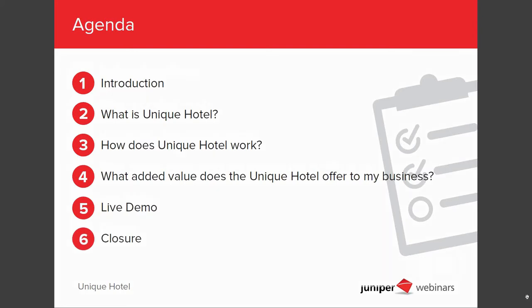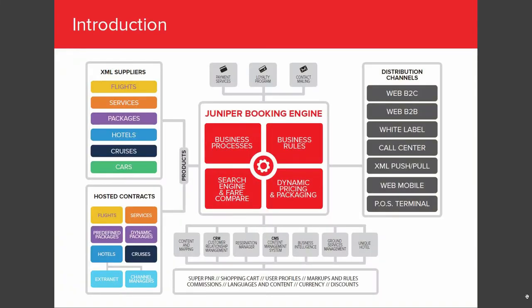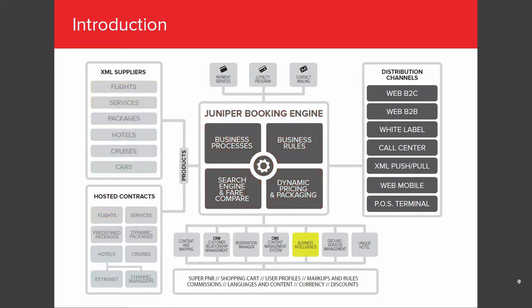Let's start with the introduction. As you can observe, we've introduced a new concept in our webinar. Thanks to this graph, you can get a clearer general view about all the products that Junihotel has. We are also going to use this graph to explain what module we are going to see, which one we have seen, and which ones are pending. In the previous webinar, we talked about business intelligence, explaining how you can improve your business thanks to this tool. If you didn't have the opportunity to attend, remember that you have the video available in your support platform.